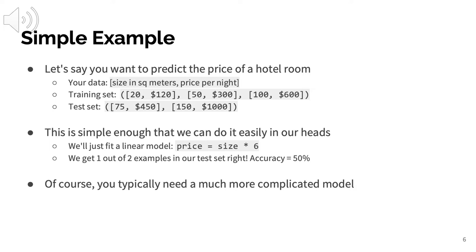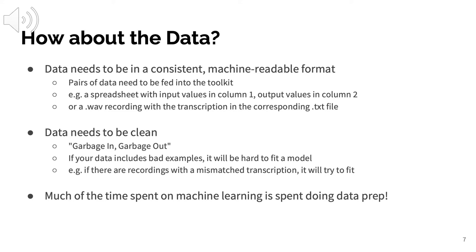This is a very simple model, but it illustrates the concept used in machine learning. When you do training and testing, you need the data in a consistent, machine-readable format. You take pairs of data and feed them into your toolkit, telling it to train on these examples using a particular model architecture. For example, you'd have a spreadsheet with input values in column one and output values in column two, or a WAV file with a recording and a corresponding transcription text file. It's really important that this data is clean — if you show it bad examples that aren't actual transcriptions of the audio, it'll be very hard to fit a model.